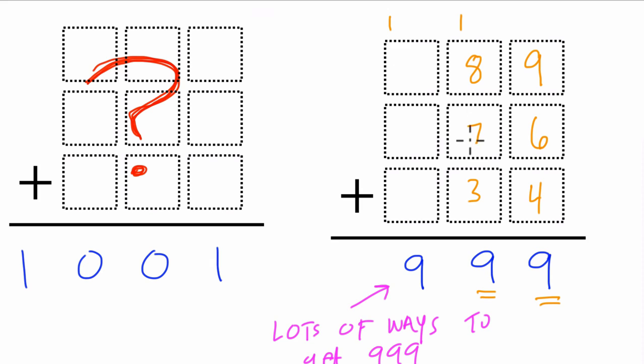So 8 plus 7 plus 3 is 19. We carry the 1 up here. And now we just need to get 8 in these 3 numbers here. And the numbers that we have left are 1, 2, and 5. And 5 plus 2 is 7, plus 1 is 8, plus 1 is 9, and we've got 999.